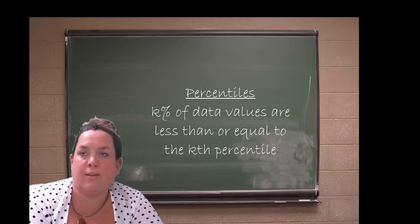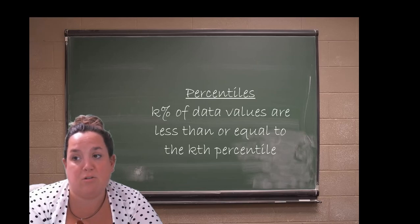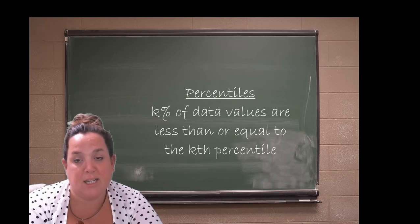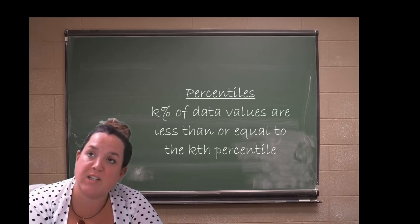If you score in the 80th percentile for the ACT/SAT, that means that you scored better than 80% of people that took the ACT/SAT. If you have a height that's in the 95th percentile, that means that you're taller than 95% of people your age.